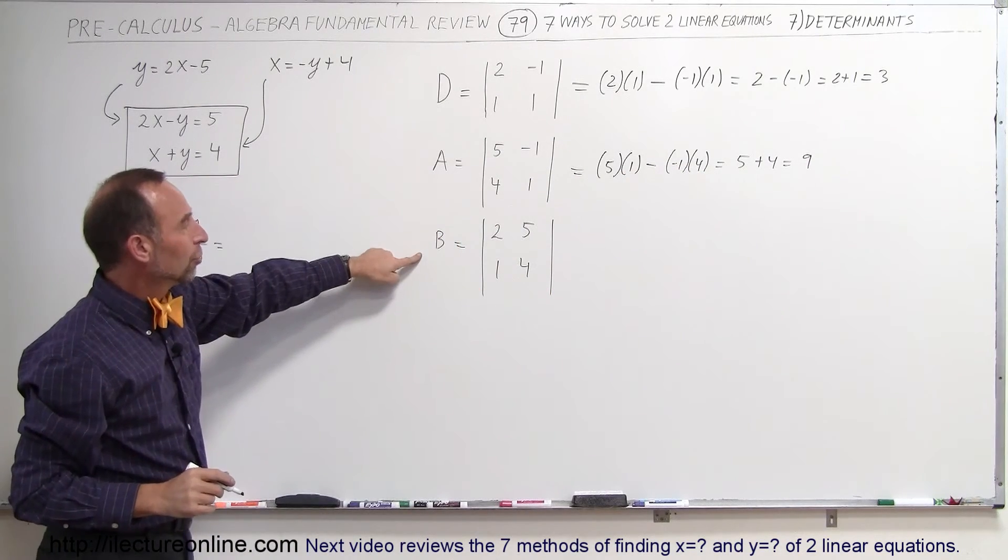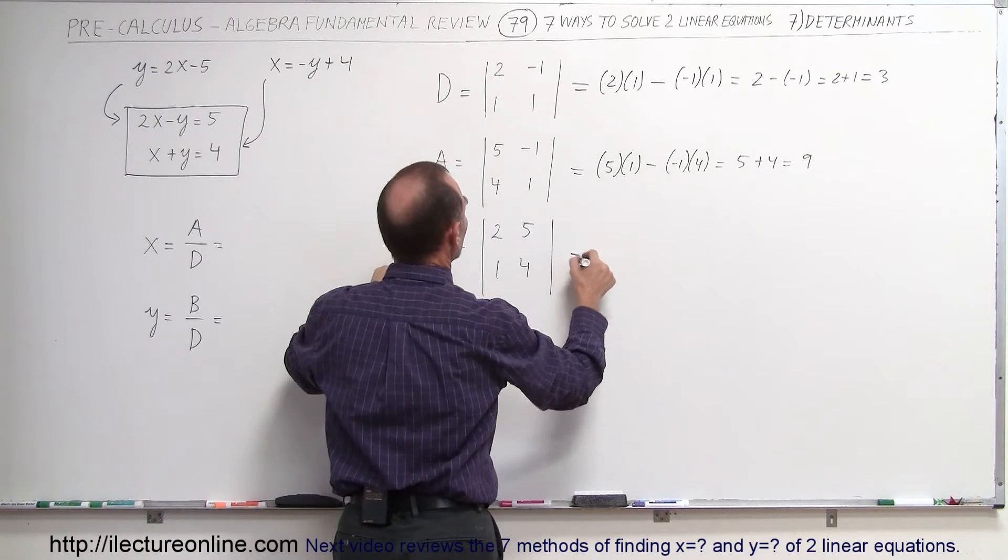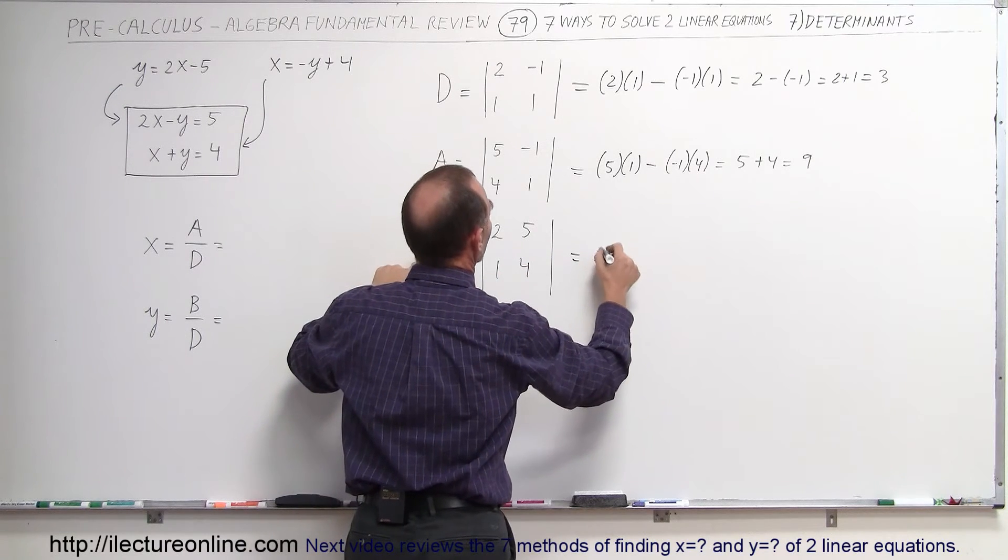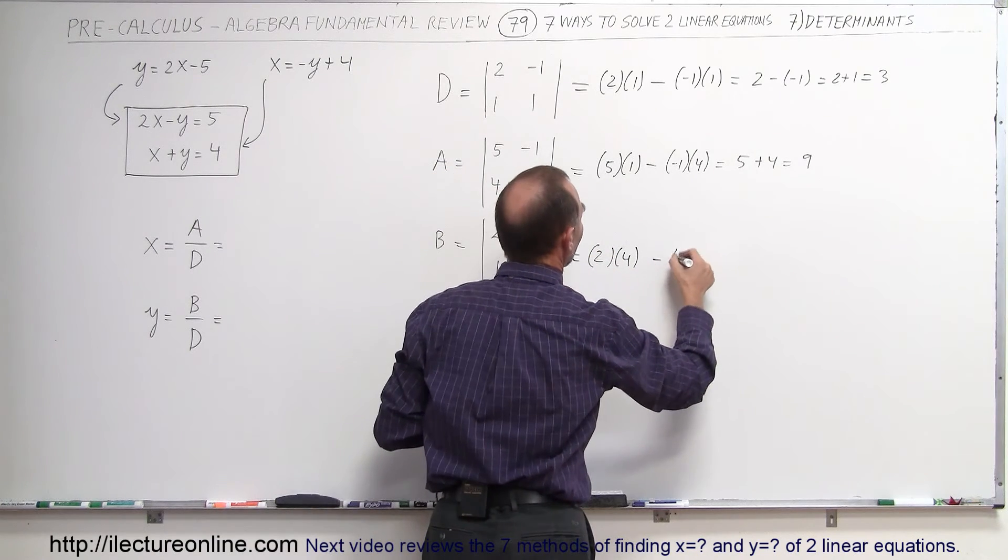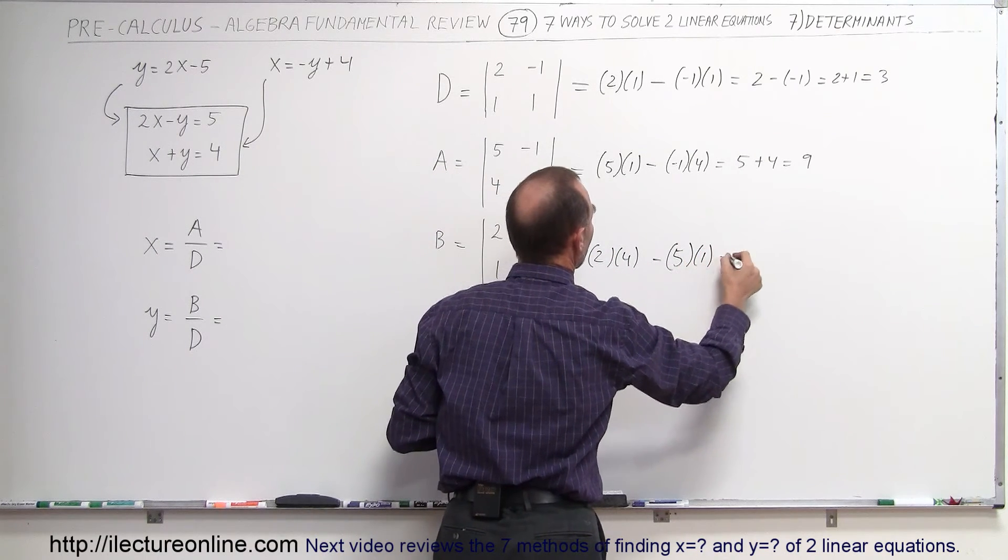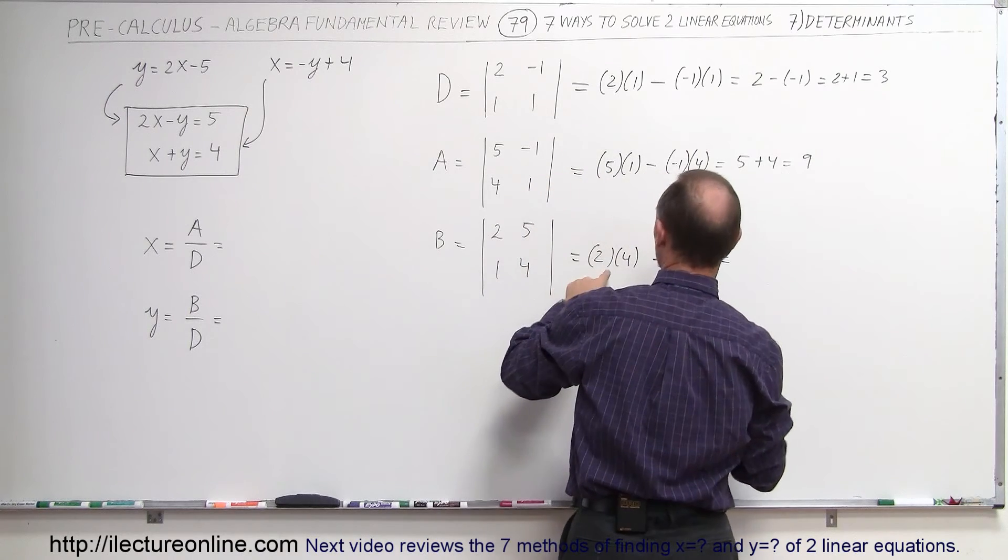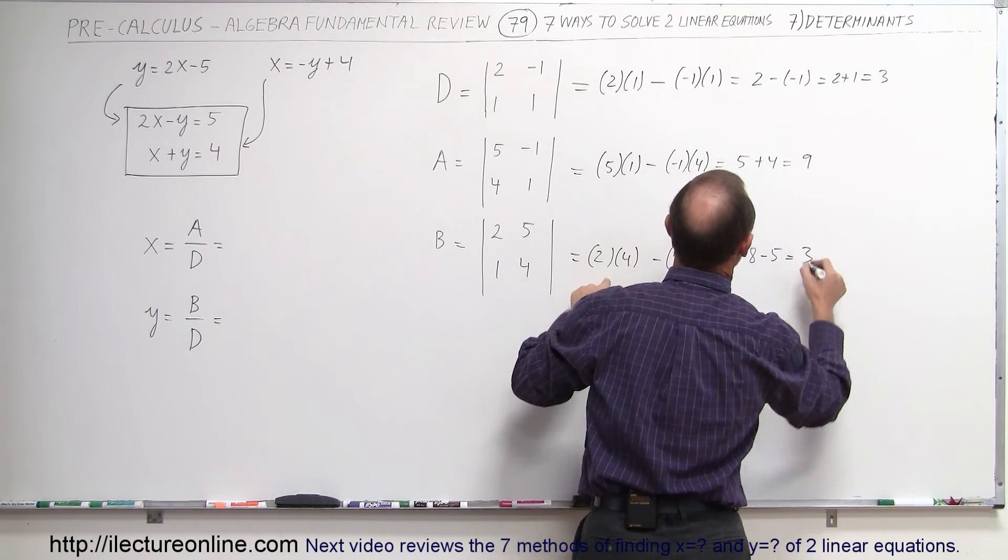Now we get the third determinant, so this is equal to 2 times 4, minus the product of those two, which is 5 times 1. So this is equal to 8 minus 5, which is equal to 3.